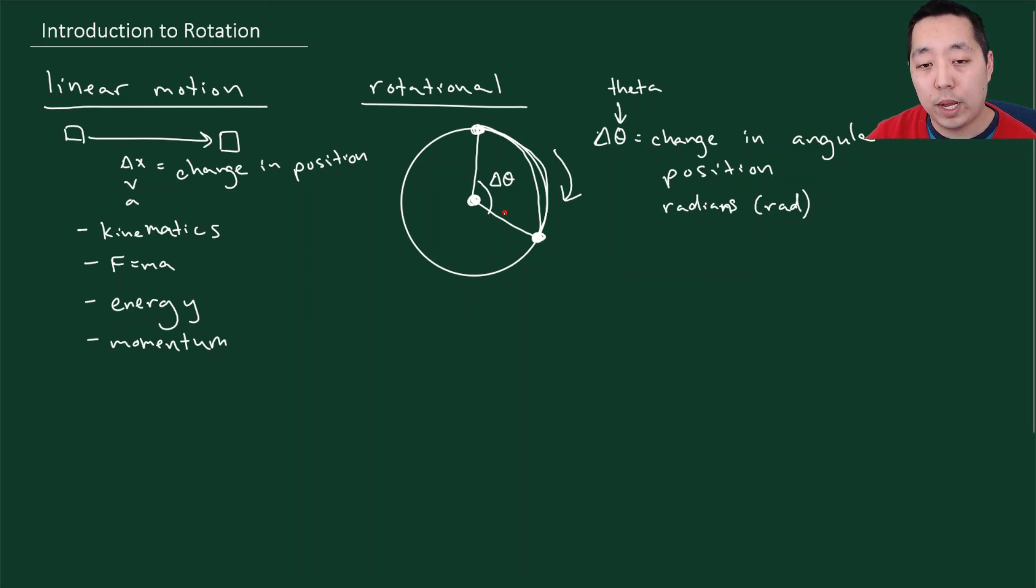We can also talk about how quickly the angle is changing, the rate at which the angle changes per unit time. We give this a letter, Greek letter omega. And we call this the angular velocity. So this is the rate at which the angular position is changing with respect to time. It's similar to velocity. Velocity is the rate at which the position changes with time.